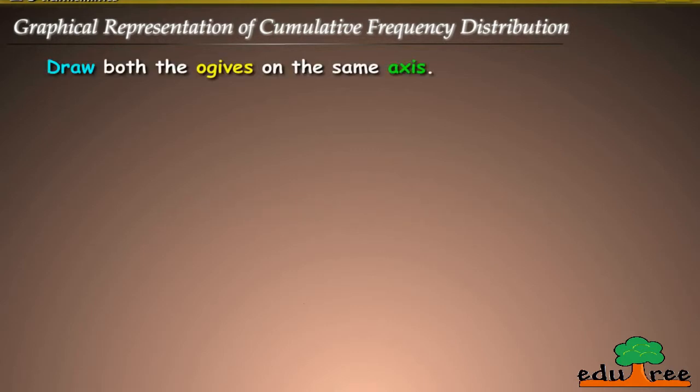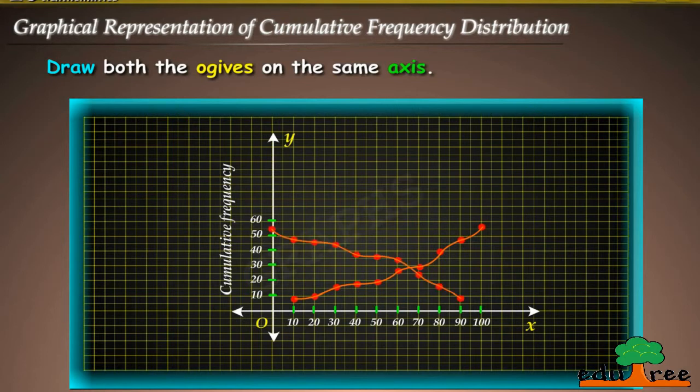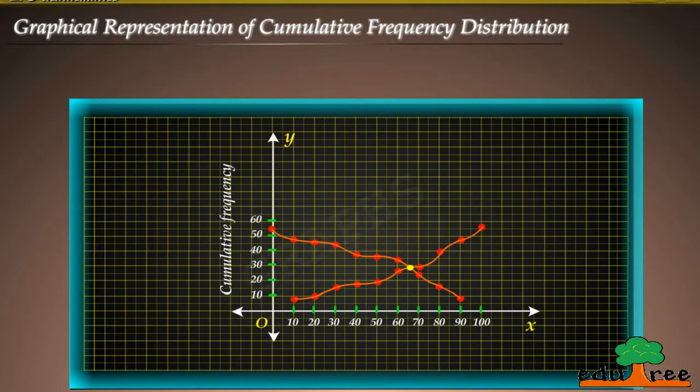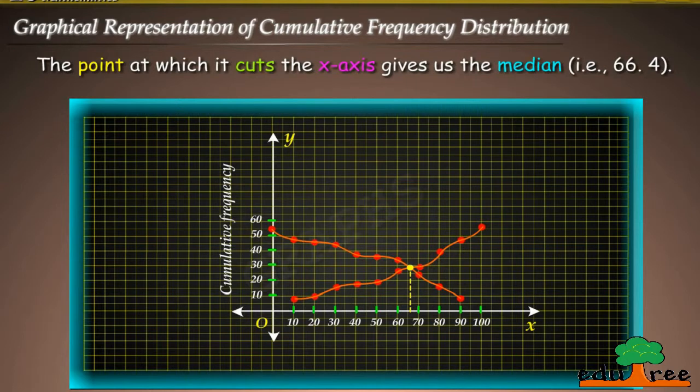On the same axis here two ogives will intersect each other at a point. From this point if we draw a perpendicular on the x-axis, the point at which it cuts the x-axis gives us the median that is 66.4.